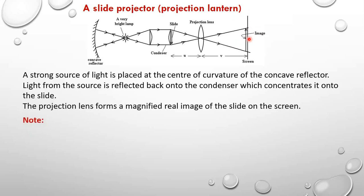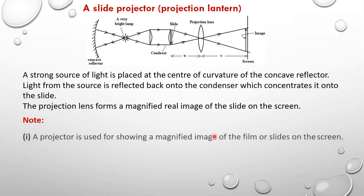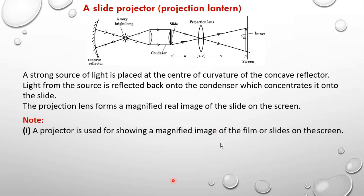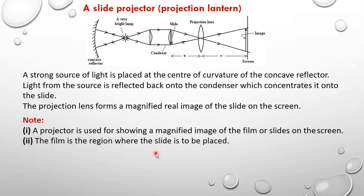Let's have a note. First of all, we need to know that a projector is used for viewing a magnified image of a film onto a screen. We also need to note that the film is the region where the slide is to be placed, and the magnification of the slide is given by M = V/F − 1, or just V/U.